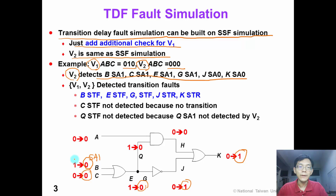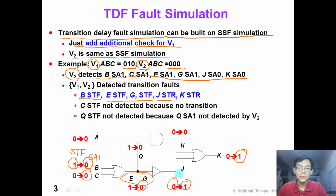Now we check the value of vector 1. In vector 1, B is equal to 1, so we have a falling transition. Therefore, B slow-to-fall fault can be detected. Similarly, in vector 1, we have a falling transition on E and G, so E and G slow-to-fall faults are detected. J slow-to-rise fault is also detected because J is equal to 0 in vector 1, and similarly K slow-to-rise fault is also detected.